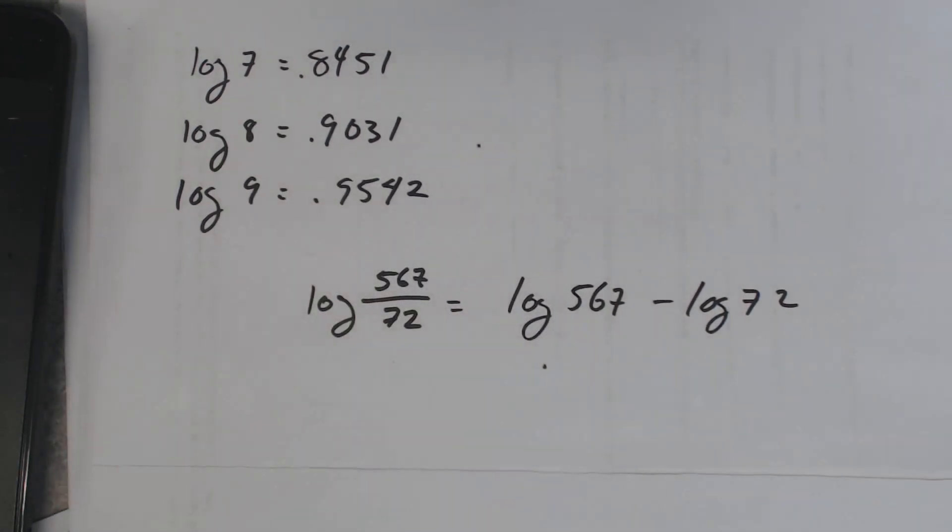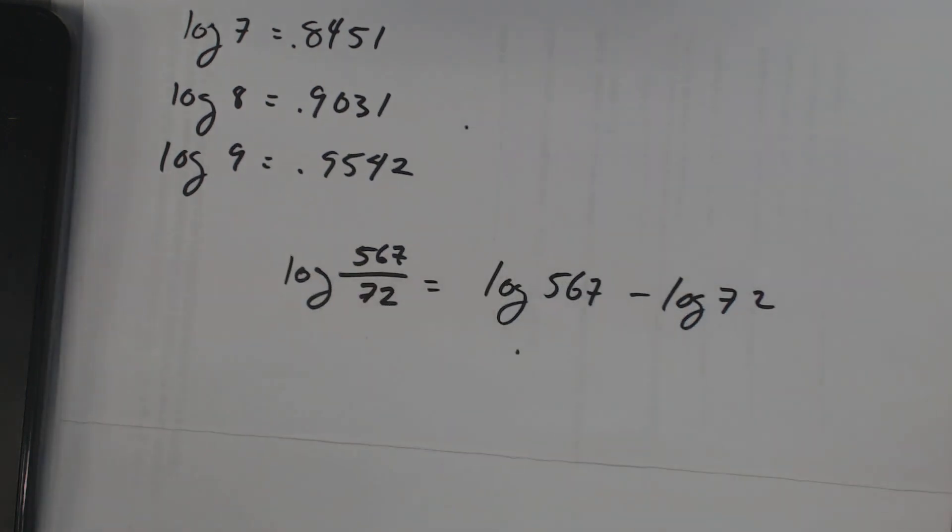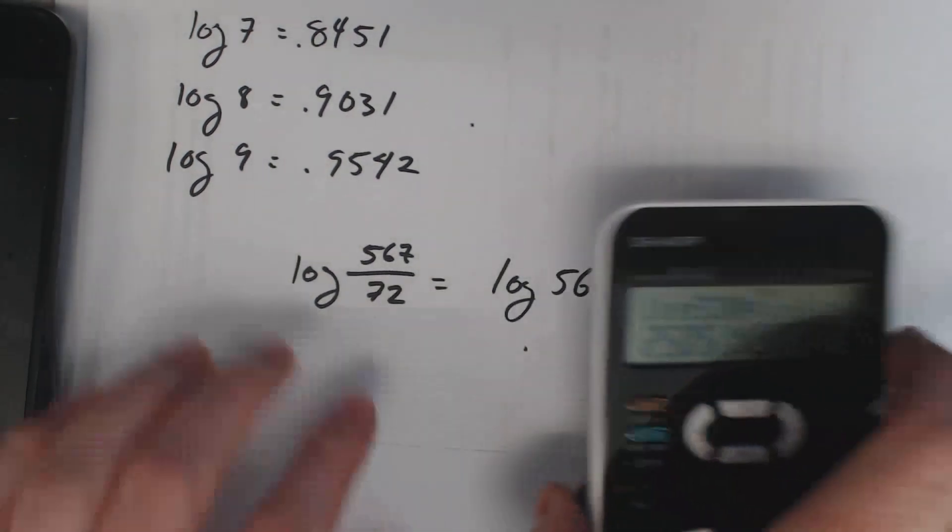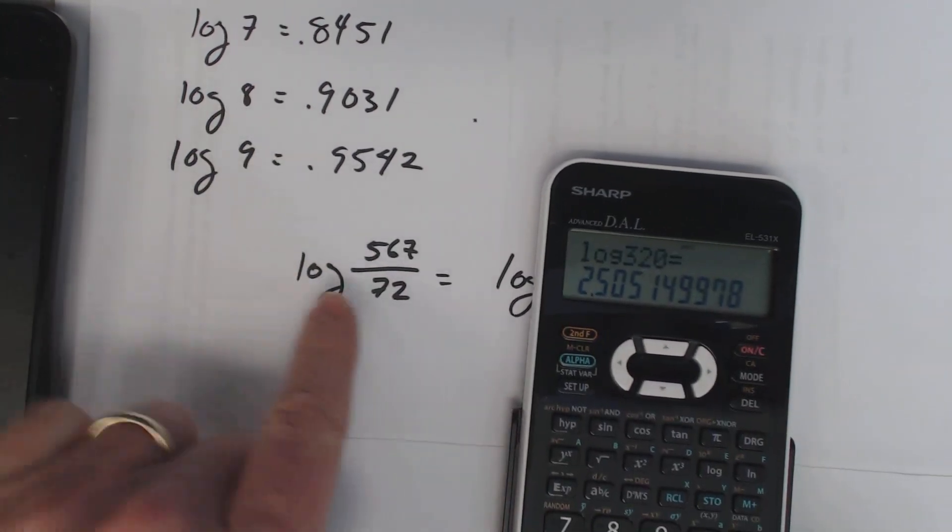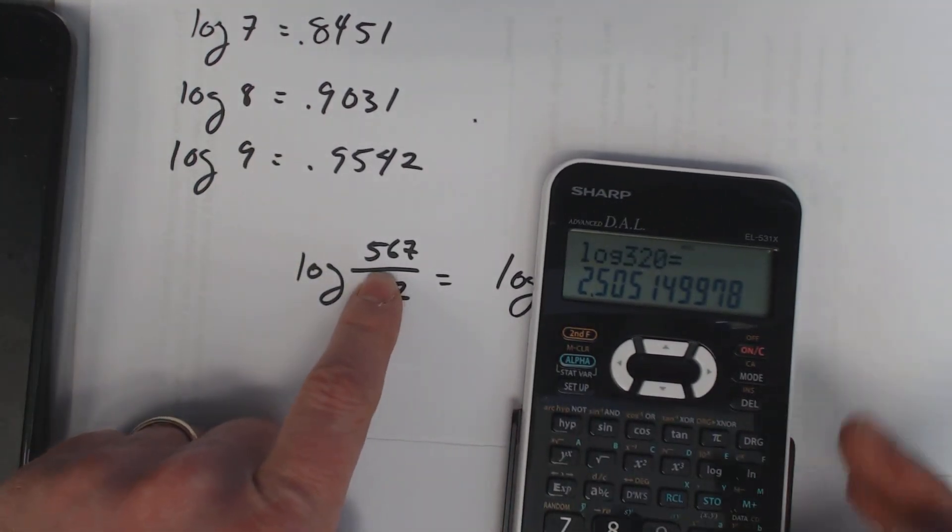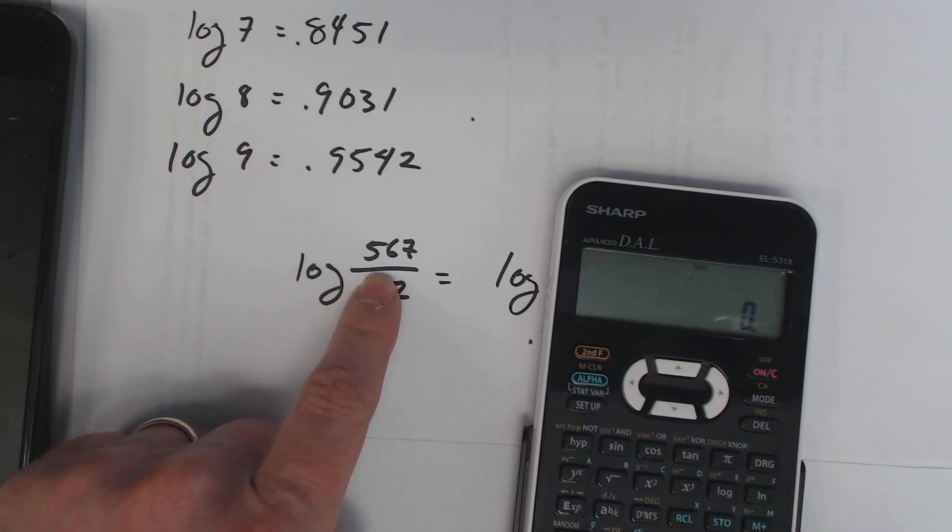I don't know my sevens, eights or nines up to 567. I don't remember my multiplication tables up that far so I'm going to do 567 divided by 7. I get 81.